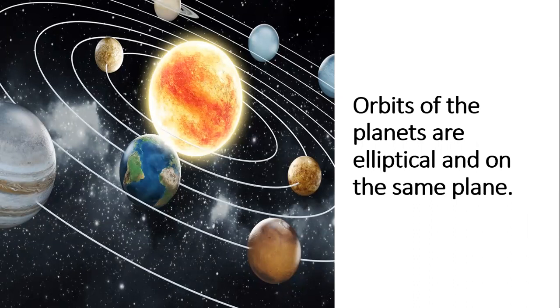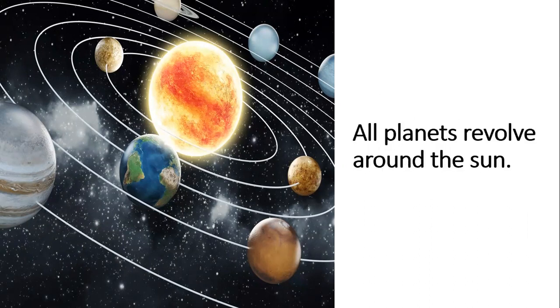Orbits of the planets are elliptical and on the same plane. All planets revolve around the Sun.